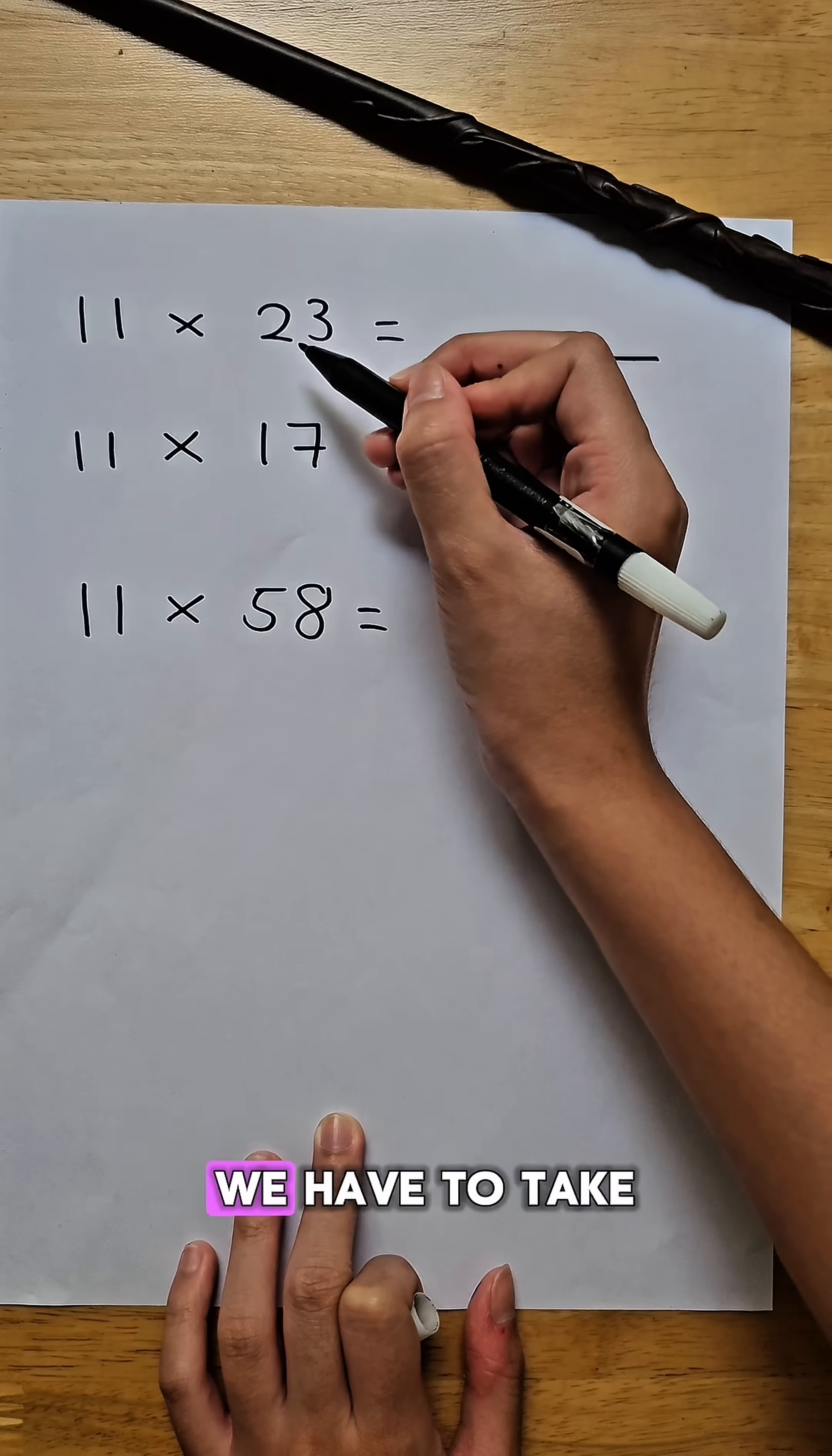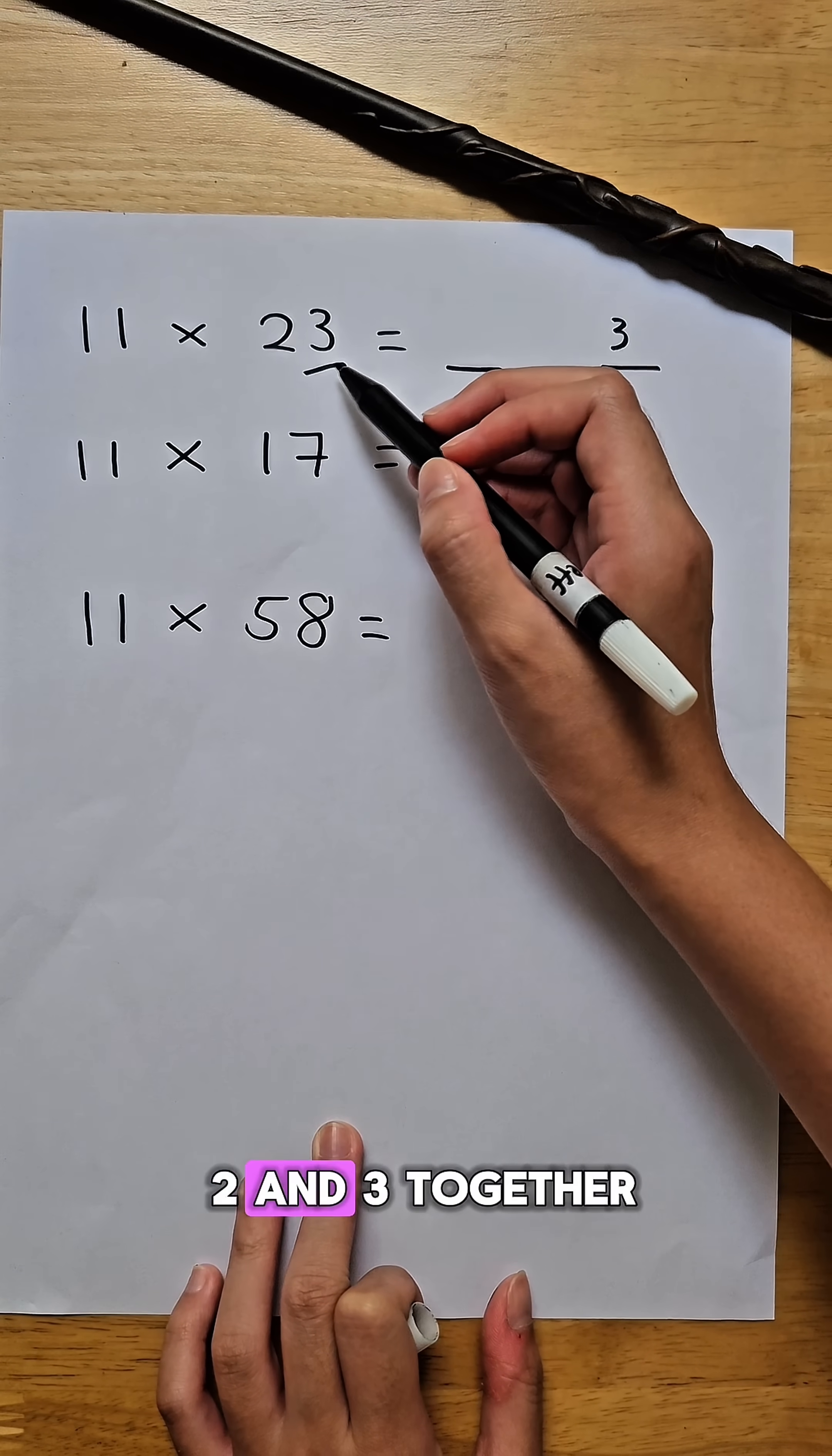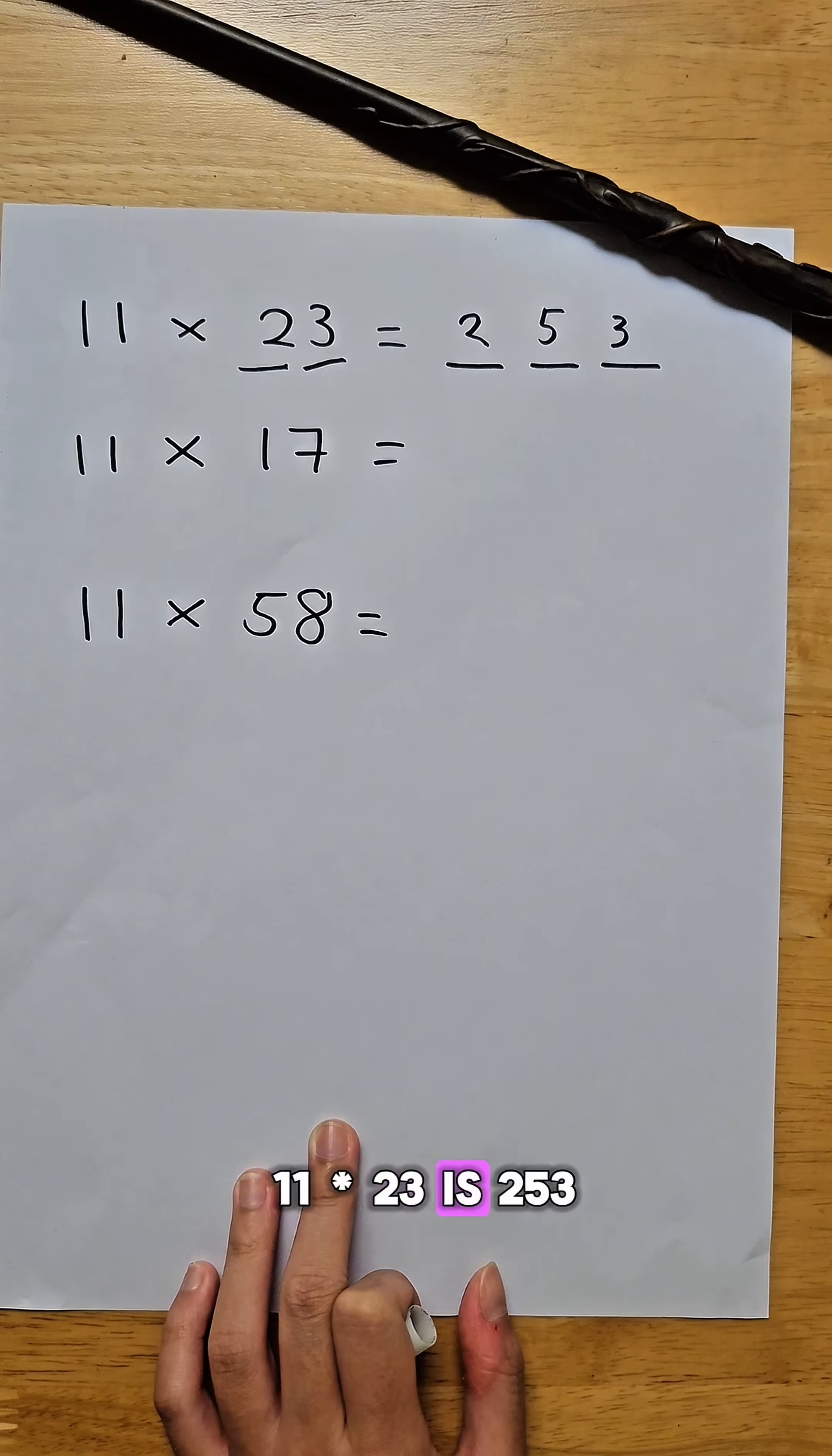For the ones digit, we have to take the last number of the number we're multiplying 11 with, so it's 3. We put here 3. For the tens, add 2 and 3 together, which will be 5. And for the hundreds, we take the first digit of the number we're multiplying 11 with, which is 2. So 11 times 23 is 253.